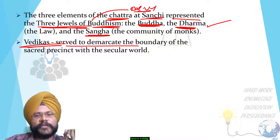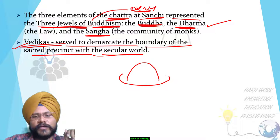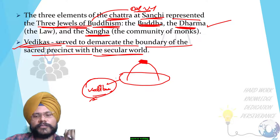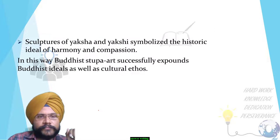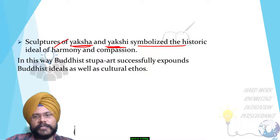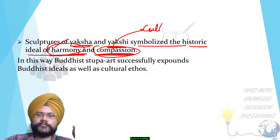Vedikas serve to demarcate the boundary of the sacred and the secular world. The vedikas are on the outside of the anda, and the hermika is on top. The sculptures of yaksha and yakshi symbolize the ideal harmony and compassion, which are cultural values.